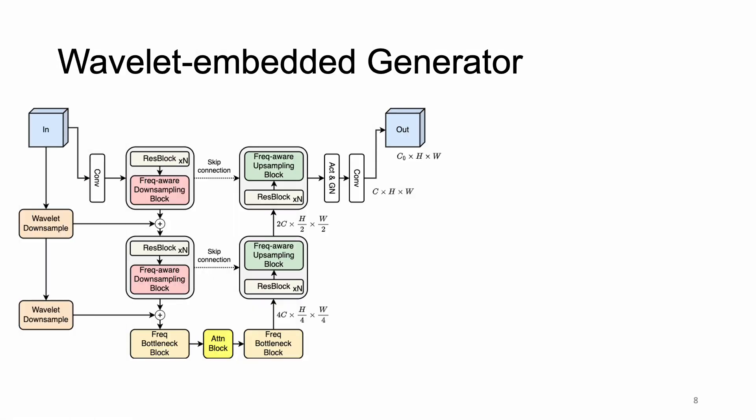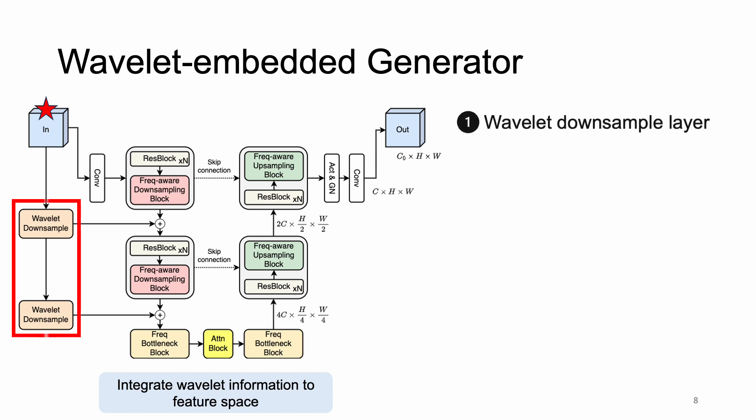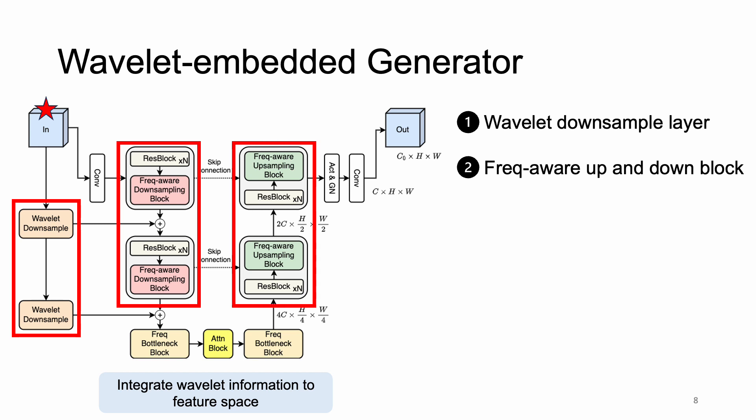Turning to network design, we further incorporate wavelet information at multiple scales into feature space through the generator to strengthen awareness of high-frequency components. The inputs are noisy wavelet subbands, which are processed by a sequence of our proposed components, including wavelet downsample layers, frequency-aware upsampling and downsampling blocks, and frequency bottleneck blocks. The outputs of the model are the approximation of unperturbed inputs. Next, I will introduce each proposed module.